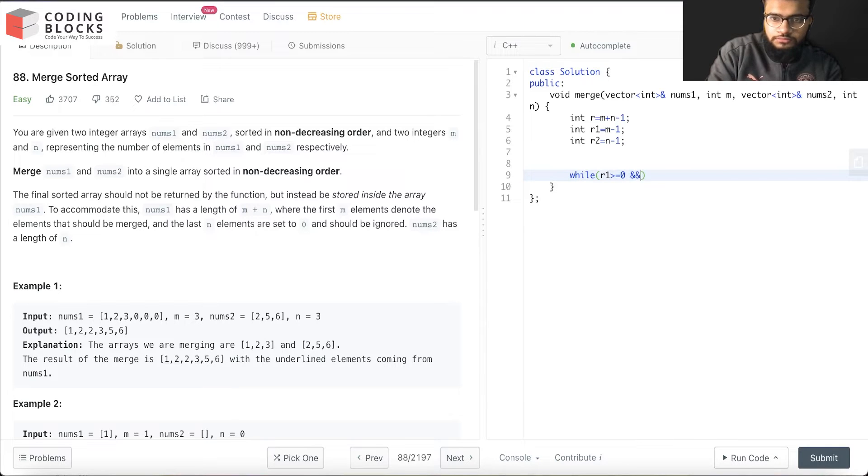r1 greater than or equal to 0 and r2 greater than 0. What we'll do is copy: r minus minus is equal to nums1[r1] greater than nums2[r2]. We'll use a ternary operator. This will be r1.